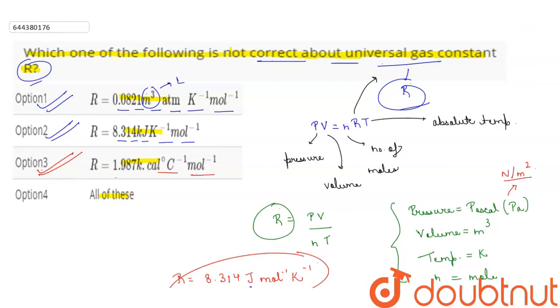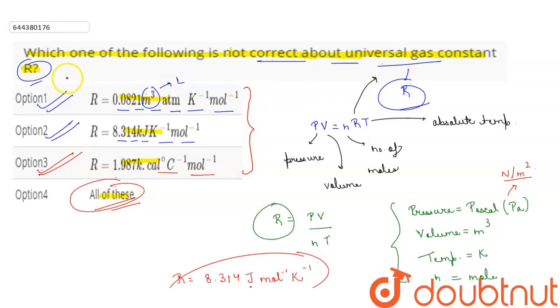Therefore, out of the four given options, all the given values are incorrect about the universal gas constant R. So the correct answer is option 4: all of these.